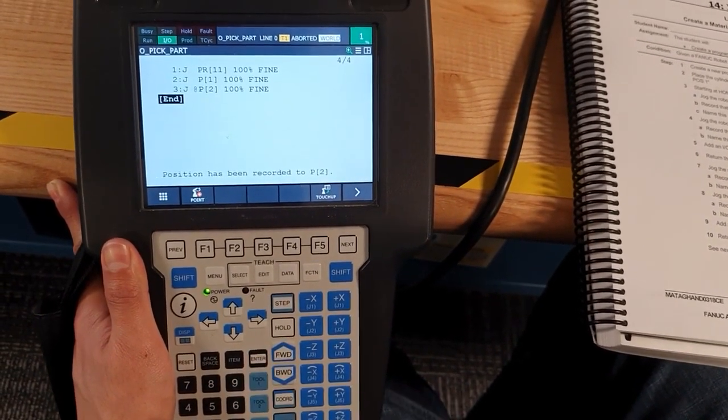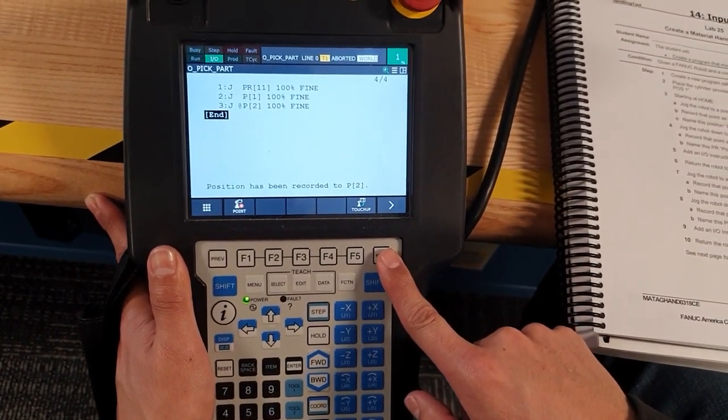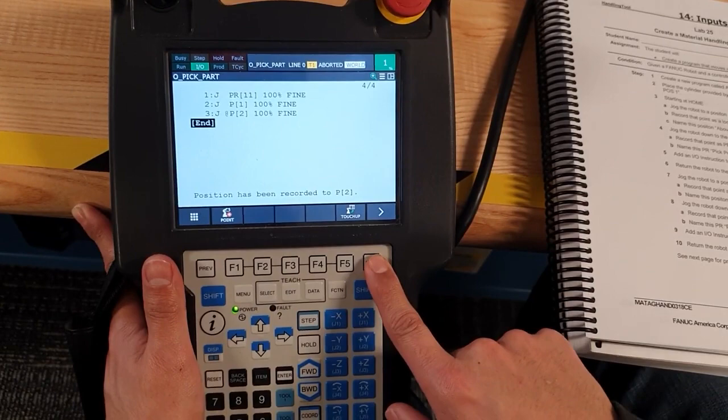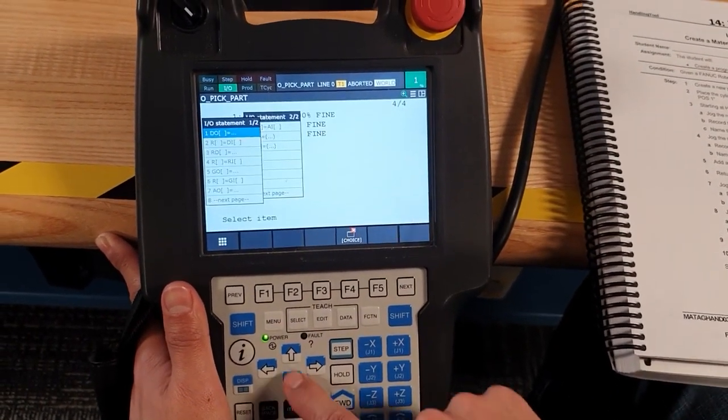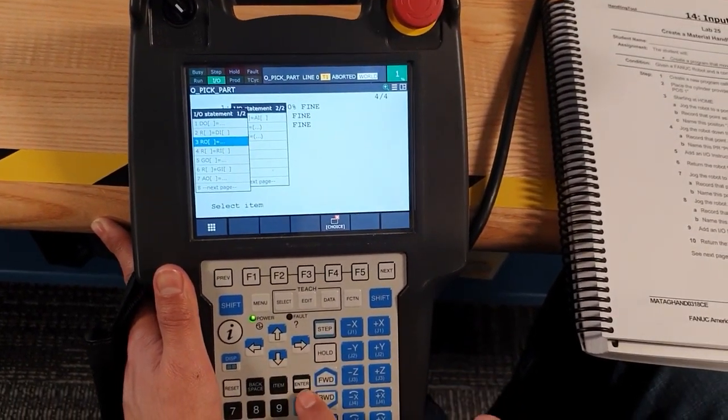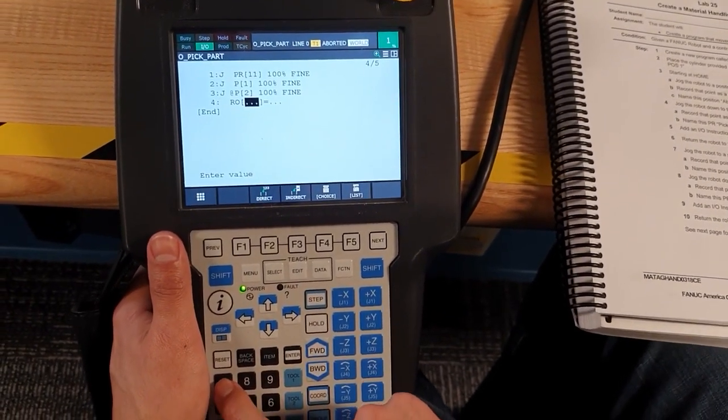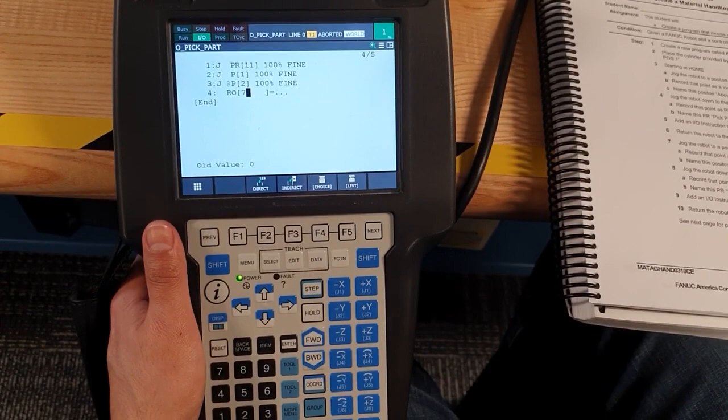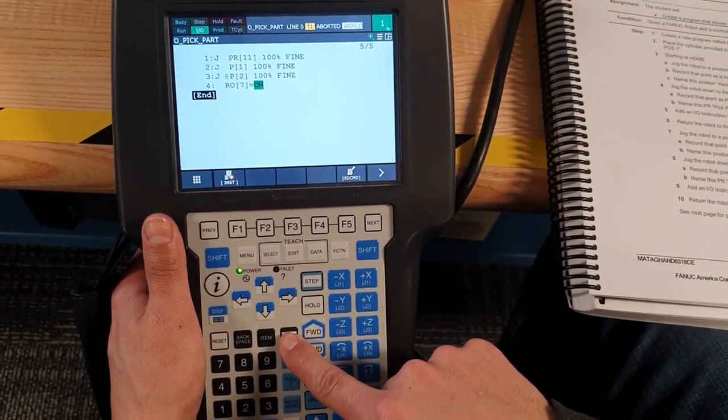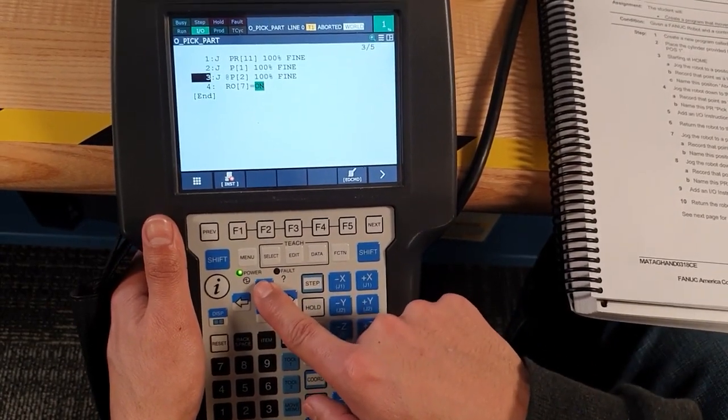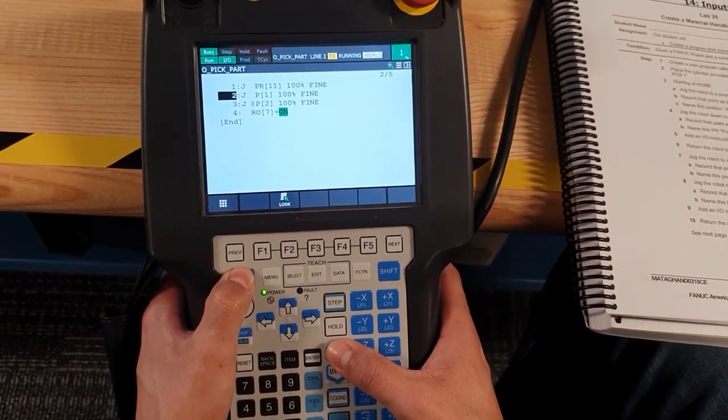Now we are going to use the gripper. Insert, I/O, robot I/O. It should be 7, and on. It should be... okay, we can test it.